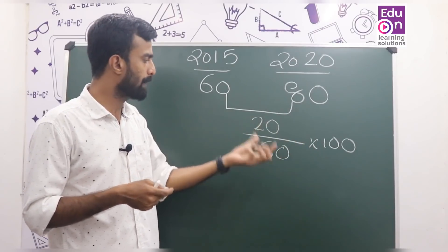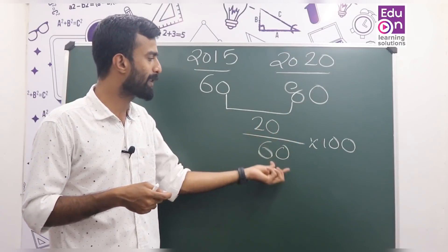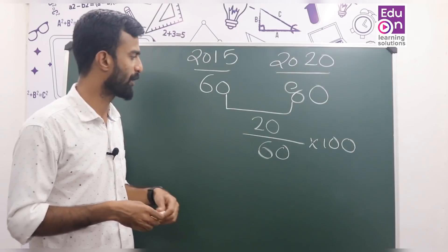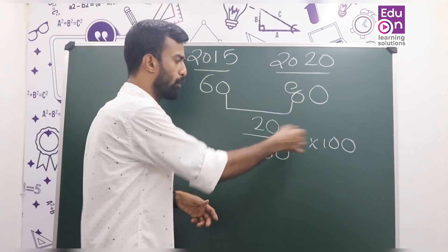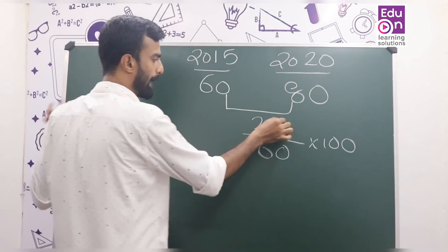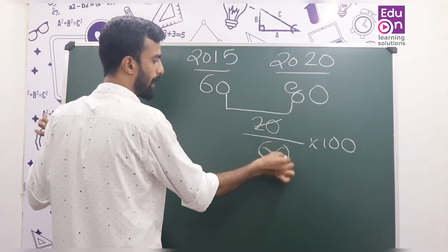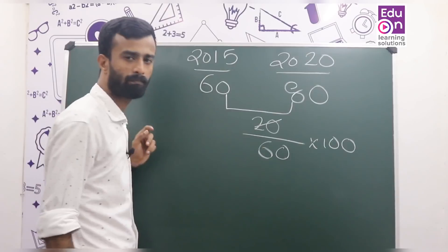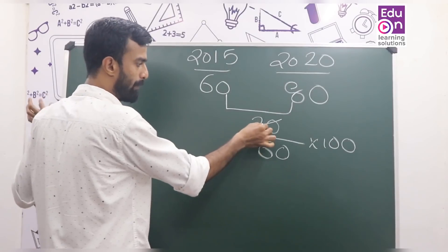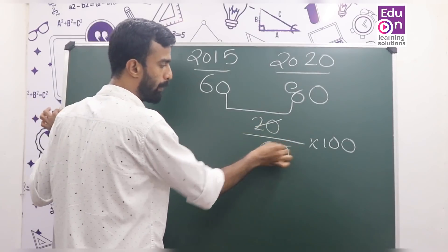So here we go. 20 divided by 60, into 100. This is the same — we're going to use 20/60. Let's take 60/60. How do we get 20/60? 20/60 is the same.